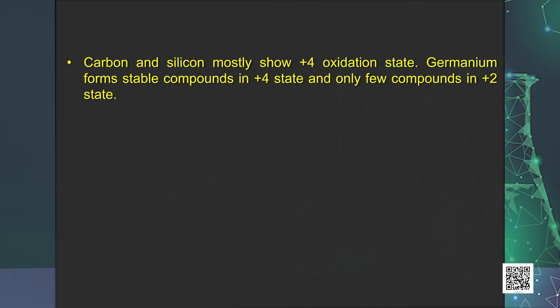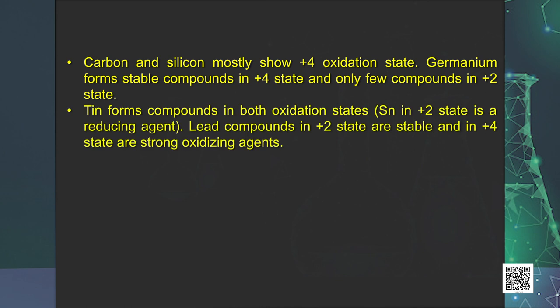Carbon and silicon mostly show +4 oxidation state. Germanium forms stable compounds in the +4 oxidation state. Tin forms compounds in both oxidation states; tin in +2 state is a reducing agent. On the other hand, lead compounds in +2 state are stable and in +4 state are strong oxidizing agents. In the tetravalent state, the number of electrons around the central atom in a molecule — for example, carbon in carbon tetrachloride — is 8. Being electron precise molecules, they are normally not expected to act as electron acceptor or electron donor species.